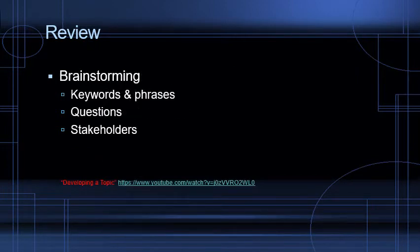The first step after picking a broad topic is to start brainstorming. We talked about generating keywords and phrases that you can use to find sources, questions that you might ask, thinking about the stakeholders — who's involved in the issue or topic that you're researching. These are all starting points for us to start researching and finding out more information, so we can eventually figure out a particular approach we want to take in our research.